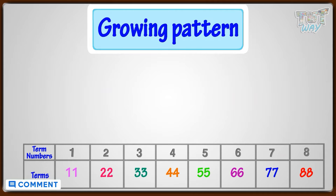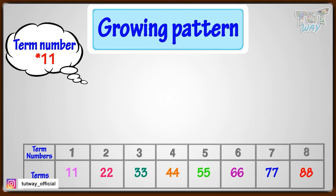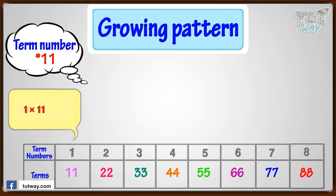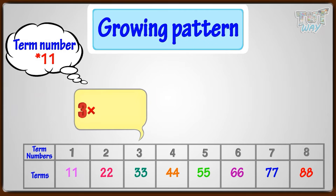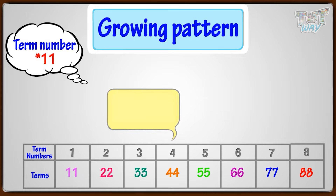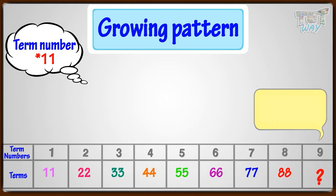There is another way, too. We can see that every term is the term number multiplied by 11. Like term number 1 is 11 multiplied by 1, that is 11. Term number 3 is 3 multiplied by 11, that is 33. Term 4 is 4 multiplied by 11, that is 44. So if we have to find the 9th term, we can say it will be 9 multiplied by 11, which is equal to 99.